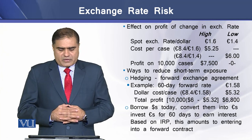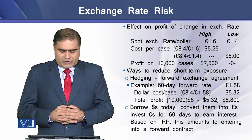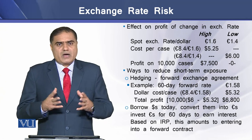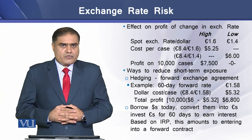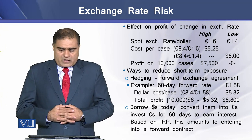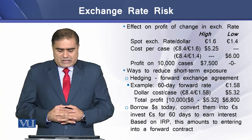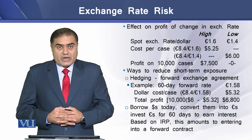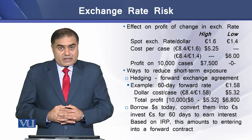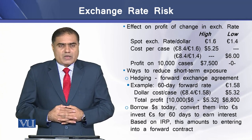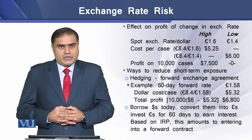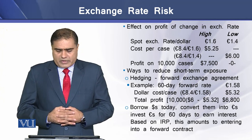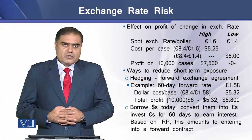There are certain ways a firm can reduce this short-term exposure. The first option is hedging — taking a low risk to avoid a higher risk — essentially a forward exchange agreement. For example, a 60-day forward rate of 1.58 euros per dollar gives a dollar cost per case of $5.32, and selling all 10,000 cases yields a profit of $6,800 US dollars.